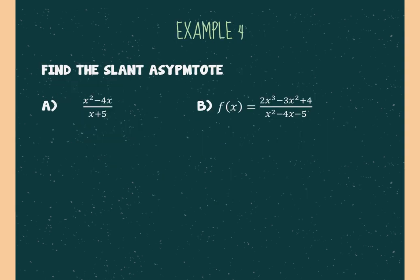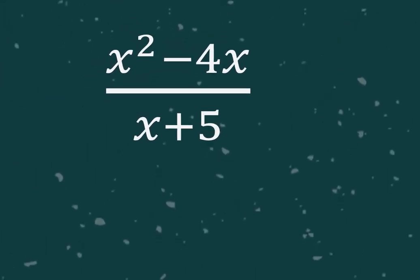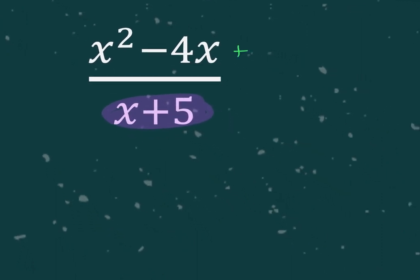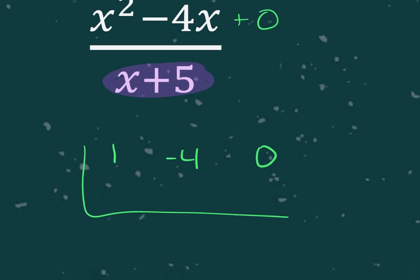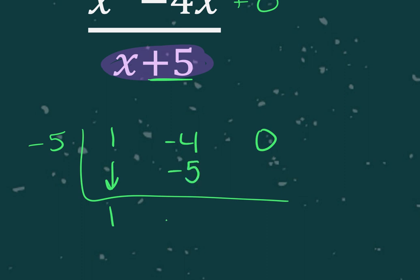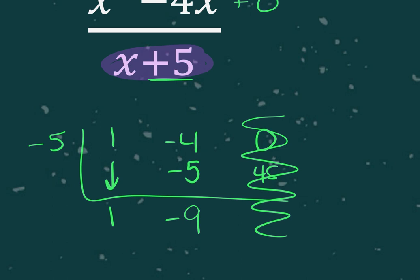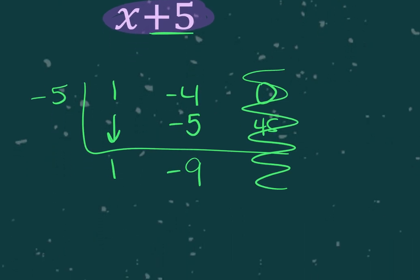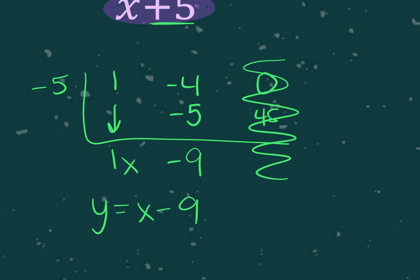For example A: the exponent in the top is 2, the exponent in the bottom is 1, so there is a slant asymptote. Since it's x to the first in the bottom, I can use synthetic division. I set up 1, negative 4, 0 as the coefficients, with negative 5 on the outside. I bring down the 1, multiply by negative 5, add to get negative 9. The remainder doesn't matter for the slant asymptote. So y equals x minus 9 is your slant asymptote.